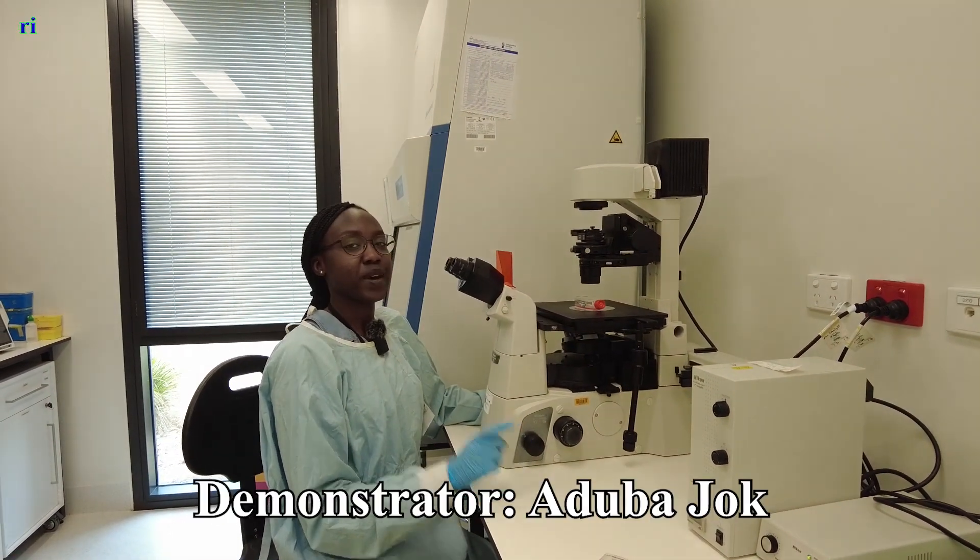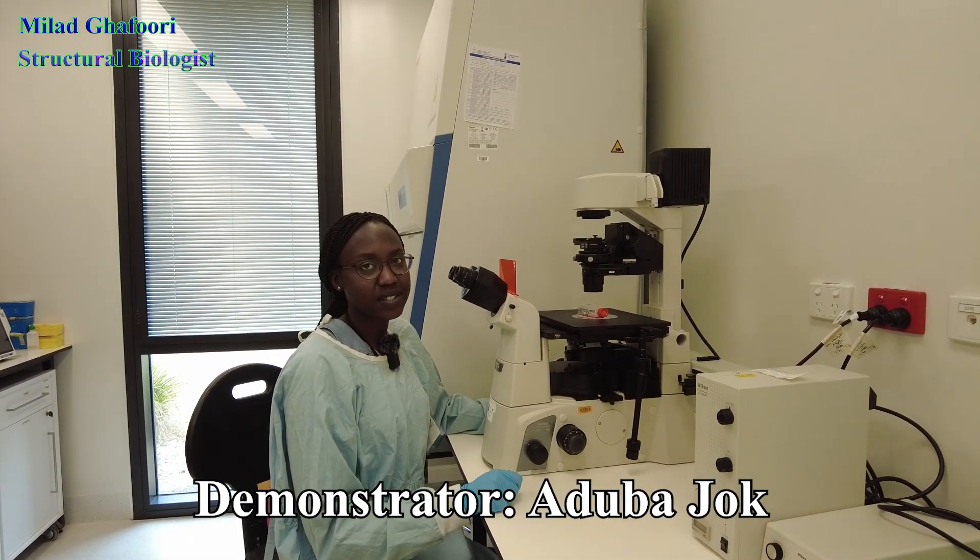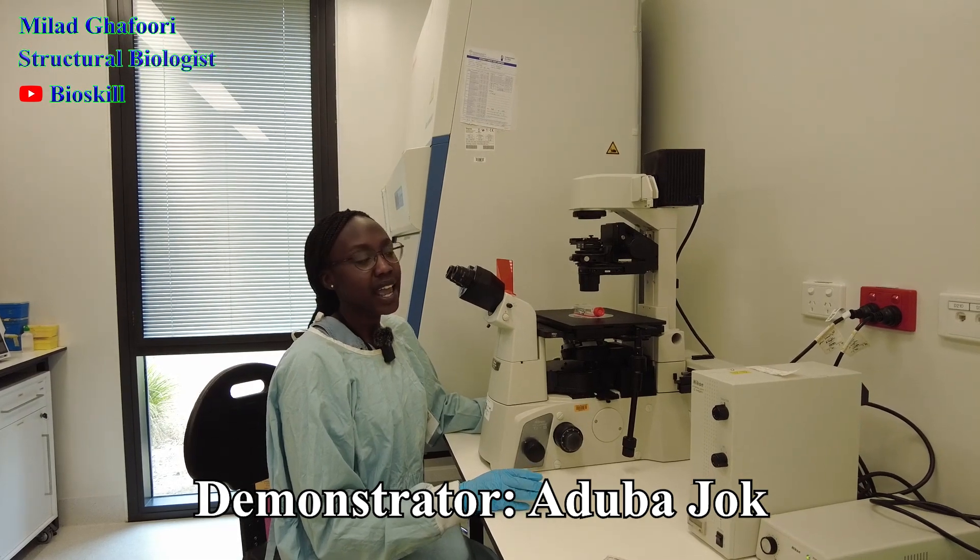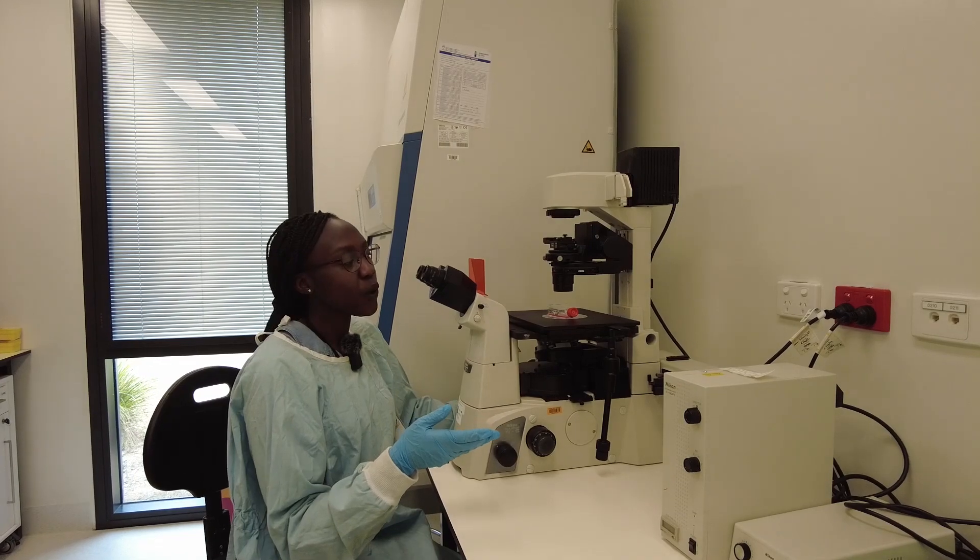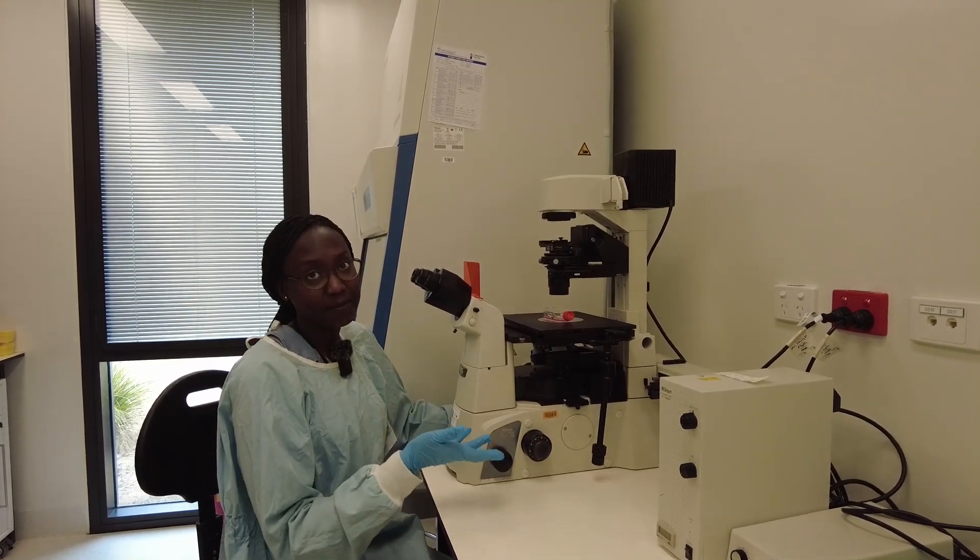So now we're going to look under the microscope at our small T25 flask for normal colon cells and we're going to determine whether or not it's ready to be split into another flask or if we need to continue growing it in the same flask.